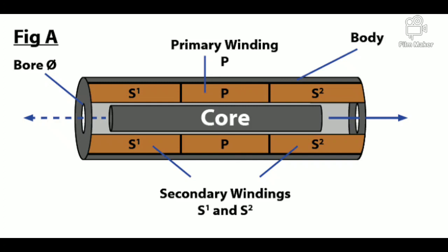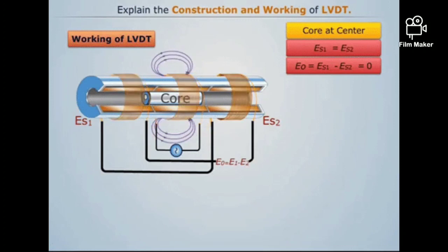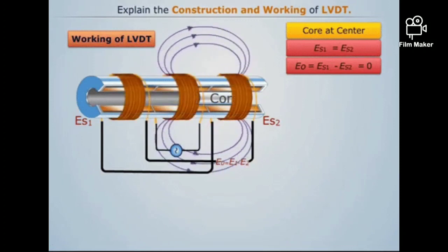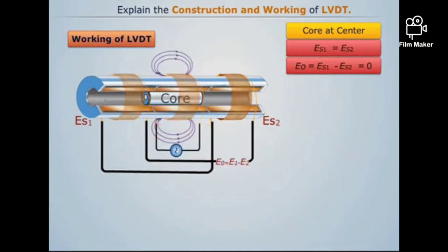Now let us see LVDT - Linear Variable Differential Transducer. It consists of one primary winding and two secondary windings as shown in the figure. At the center of these windings, a core is situated. This is an animation of LVDT. The inner winding is called the primary winding and the outer windings are called secondary windings.